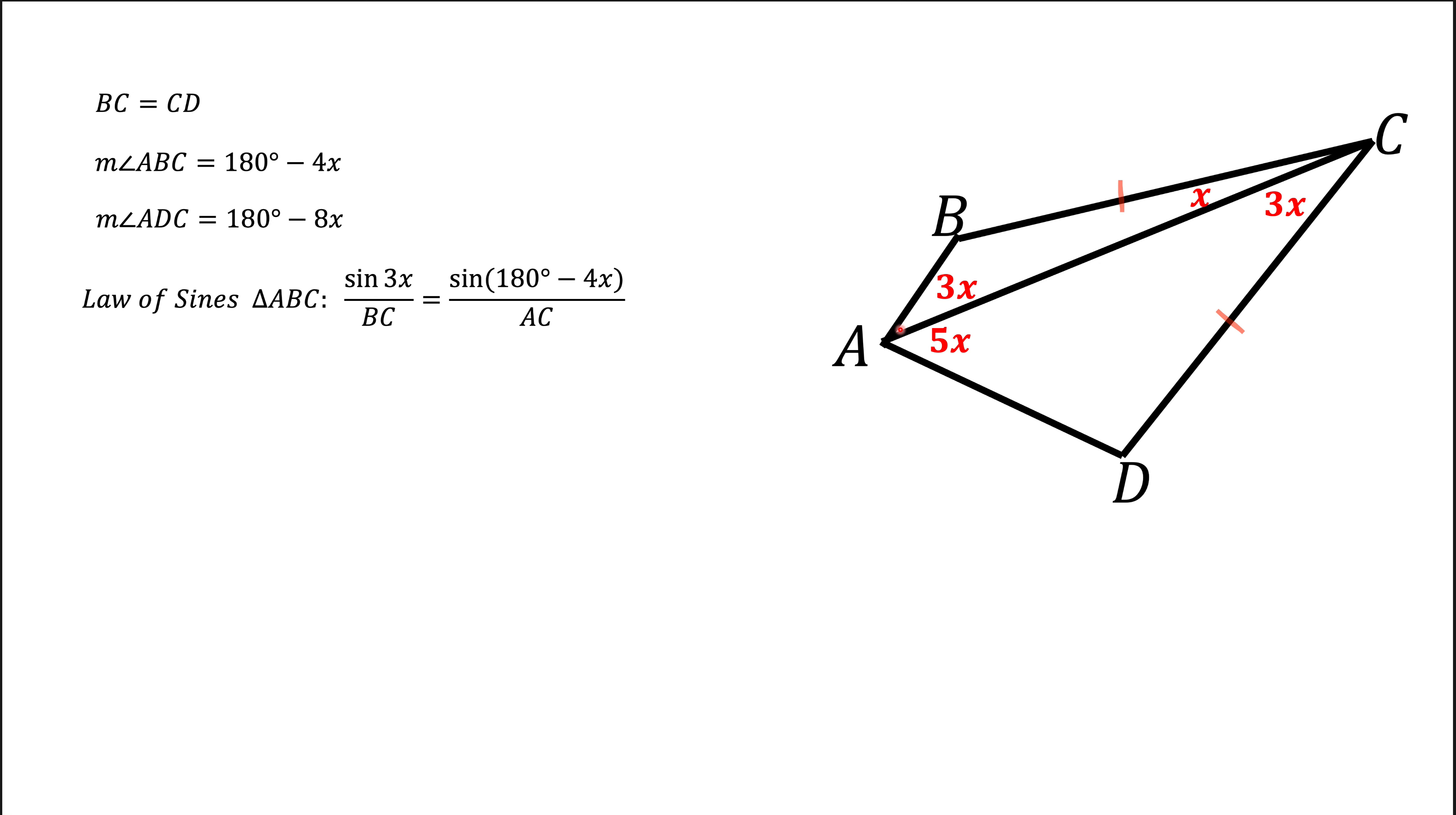In a similar way we can use law of sines for triangle ADC. In this case we'll take this angle 5x, take sine of it divided by the opposite side CD, and that should be the same as sine of angle D, which is 180 minus 8x, divided by side AC.